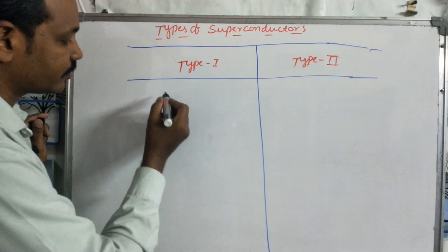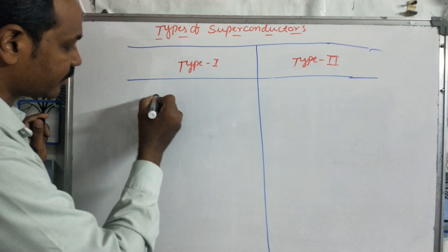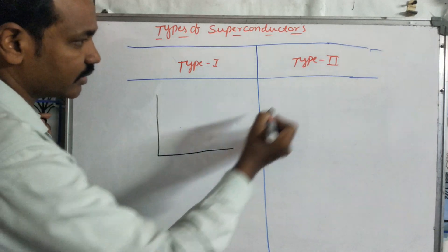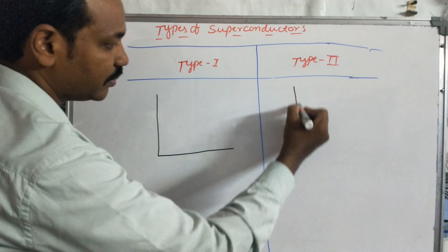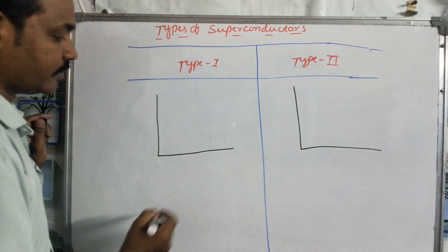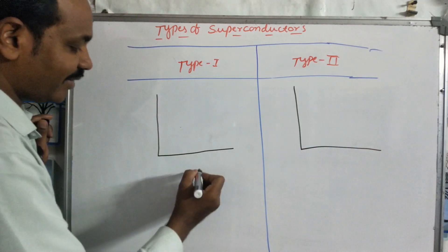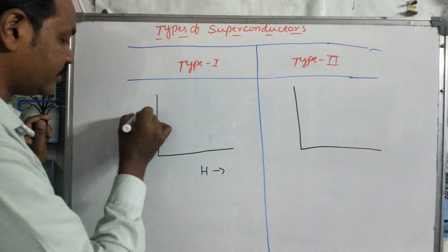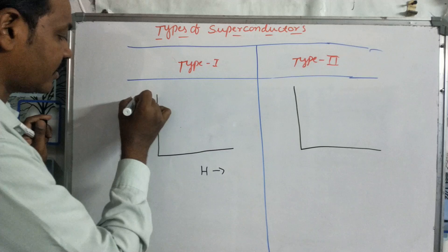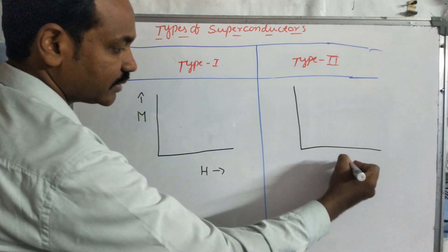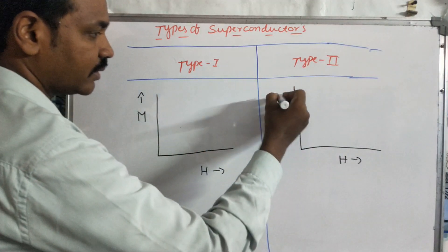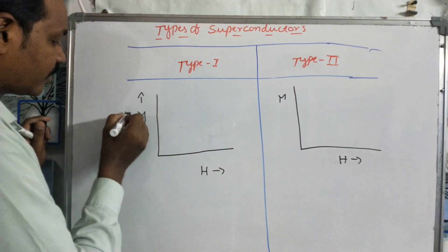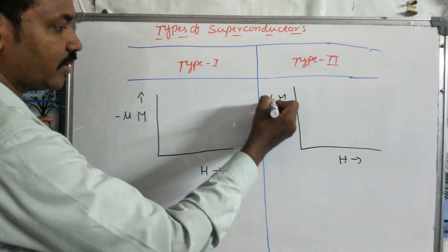For Type 1 superconductors, let's look at the graph. We draw a graph of magnetic field H versus magnetization M. On the Y-axis we have magnetization M, and the value is minus mu times M1.